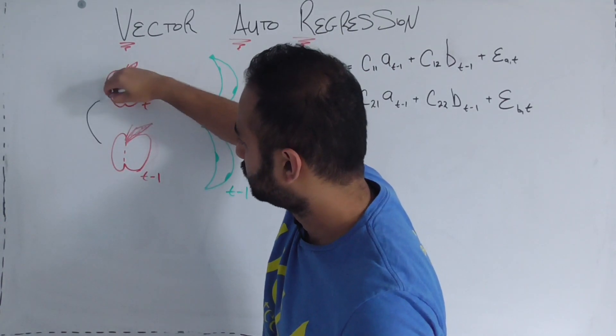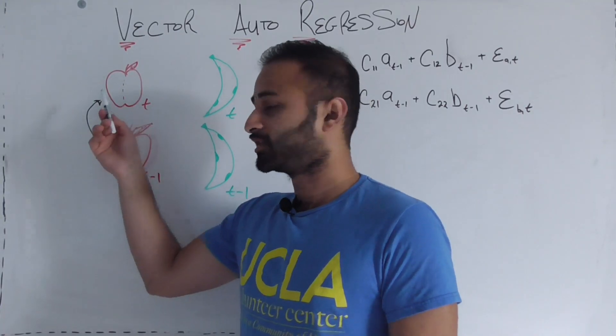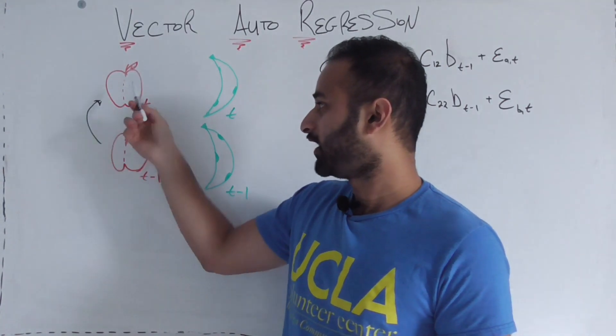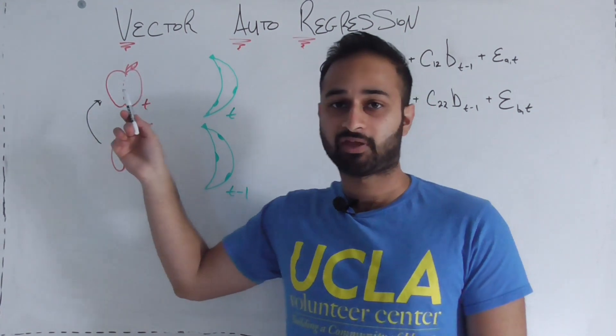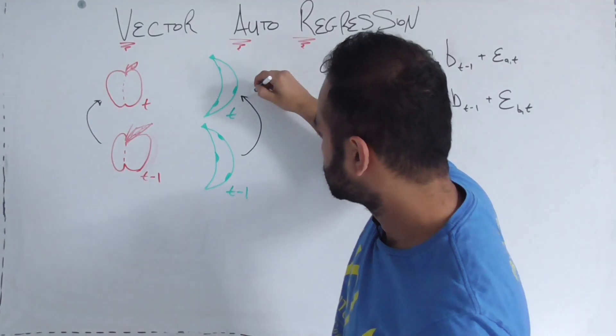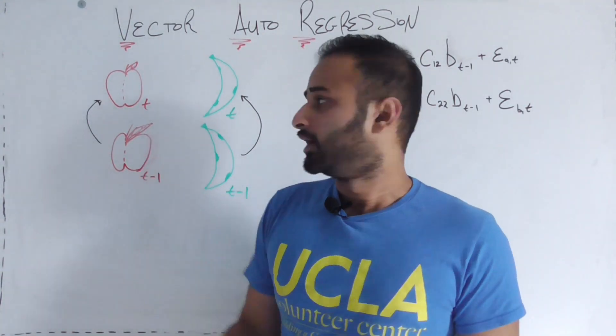We know that the number of apples you sold last month can be a factor of how many apples you're going to sell this month. This arrow says that if you know the number of apples you sold last month, that can affect the number you sell this month, and we can build that into our model. Likewise, the number of bananas you sold last month can affect the number of bananas you sell this month.